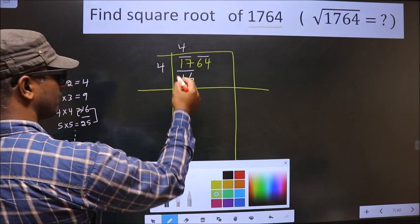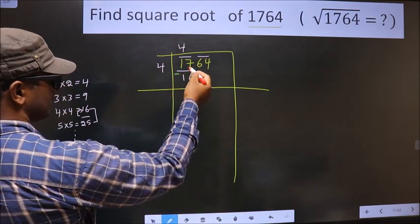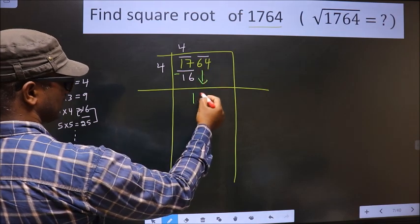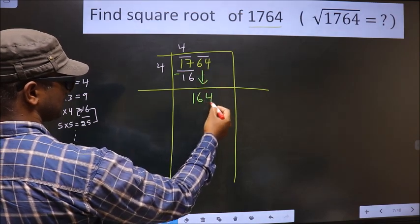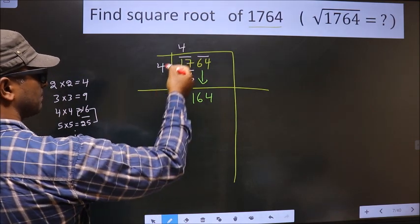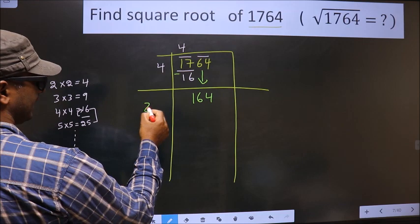Now we subtract. 17 minus 16 is 1. This pair as it is will come down, making it 164. Now here you should add these two numbers. That is 4 plus 4, 8.